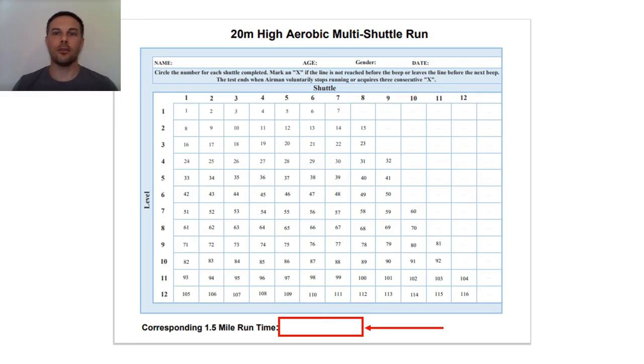When you have identified the airman's level and shuttle to their gender, age, and lap sheet, you will write the corresponding 1.5 mile time run at the bottom area marked with a red block. Then did not make the minimum amount of shuttles. Then write weather to signify the airman did not make the minimum amount of shuttles and is afforded a weather waiver.